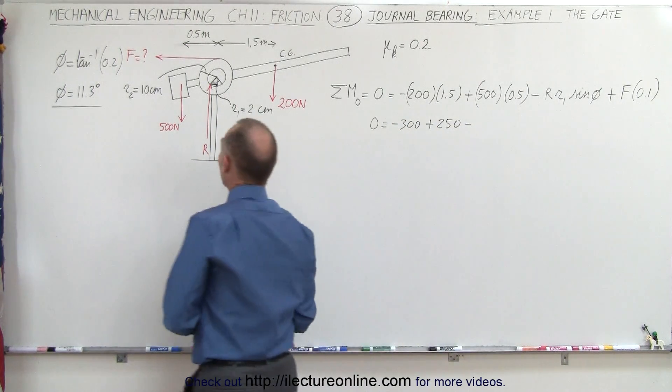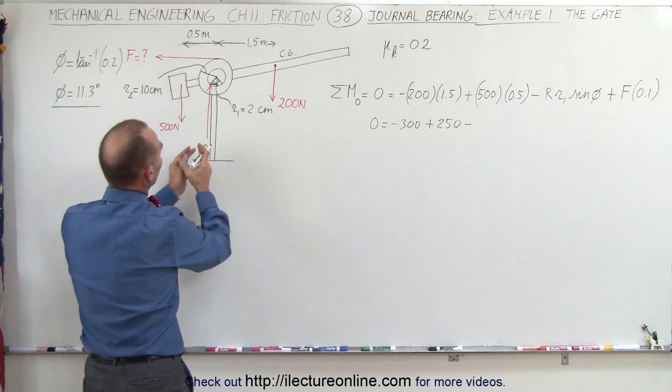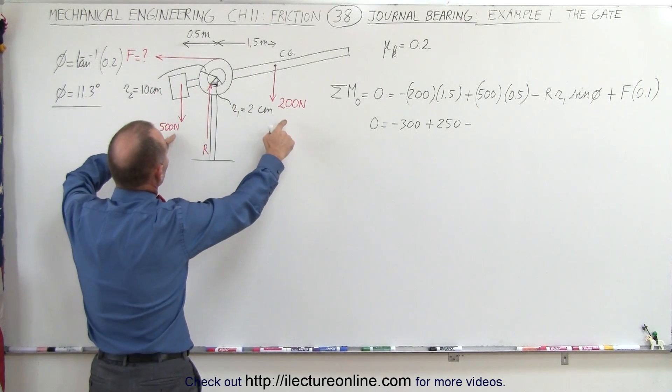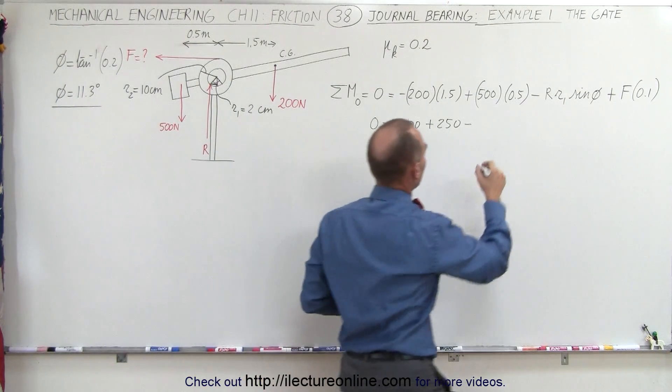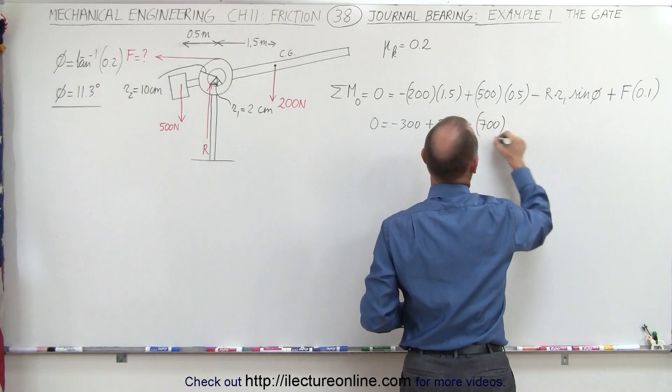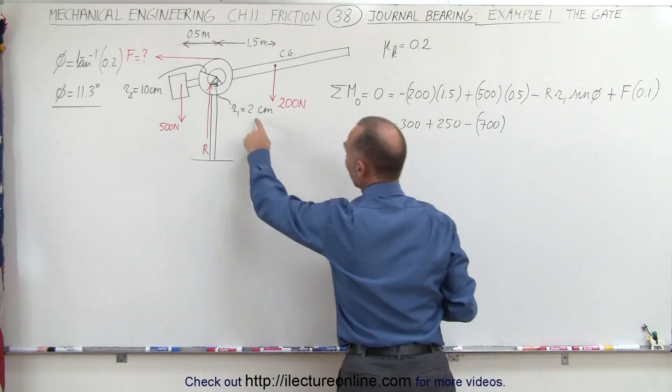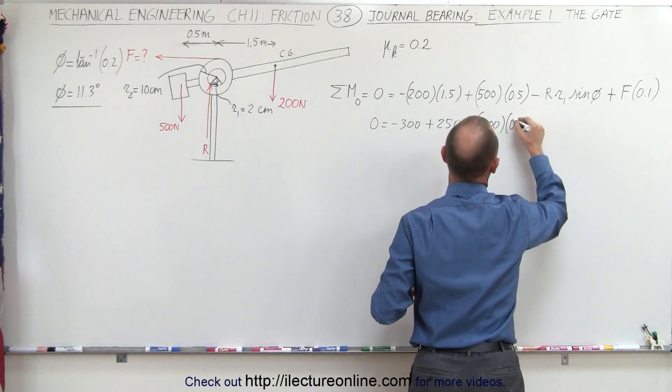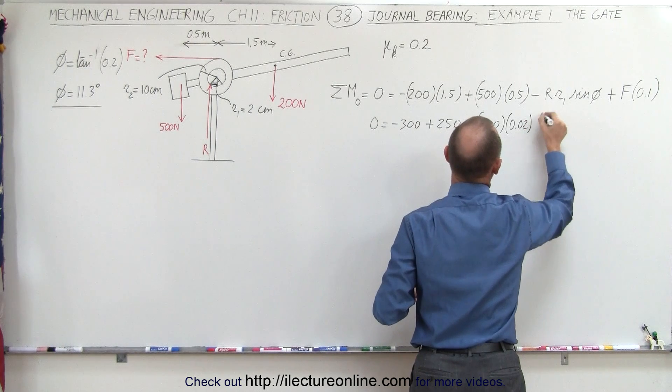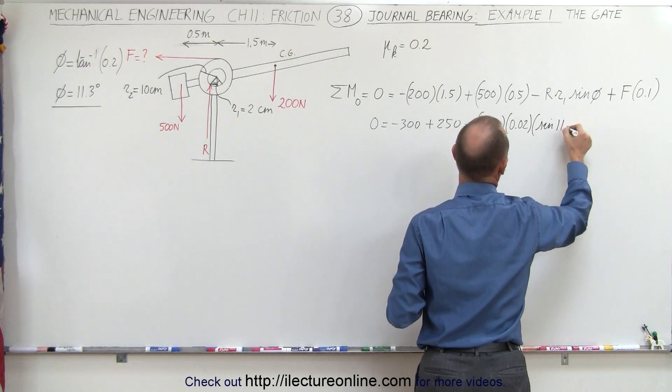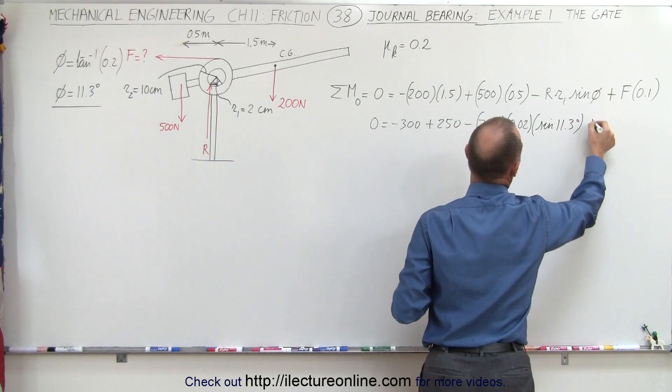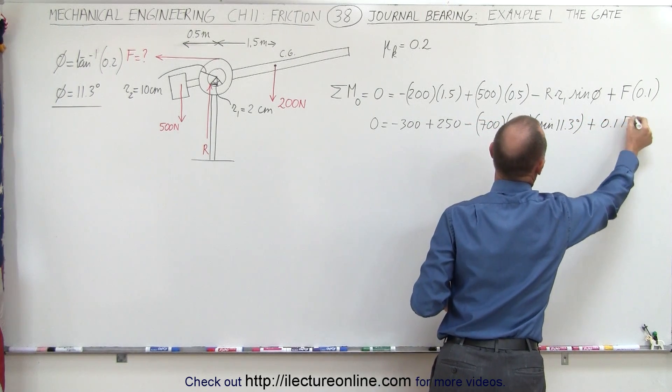Now what's the reaction force? The reaction force is equal to the weight, and the weight is going to be the sum of these two, so that would be 700 newtons, multiply times R1. R1 is two centimeters, 0.02 meters, and the sine of 11.3 degrees, and then plus 0.1 times F.